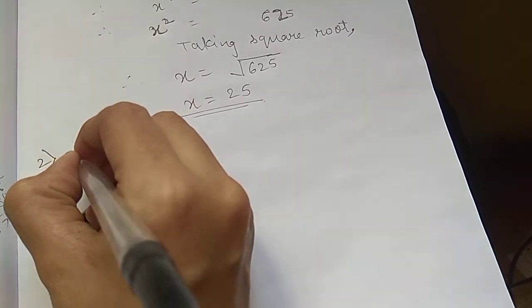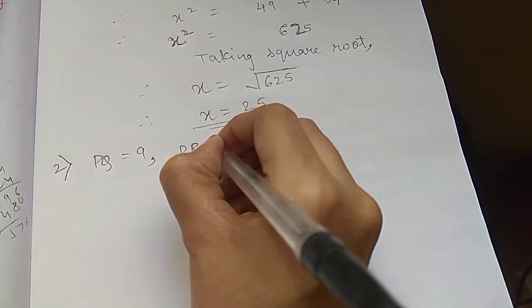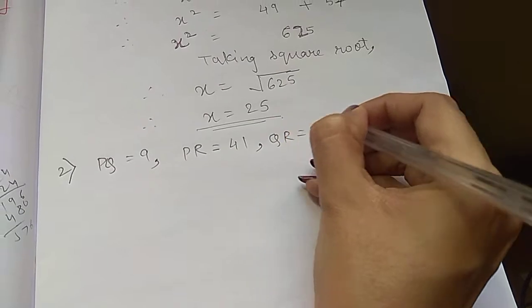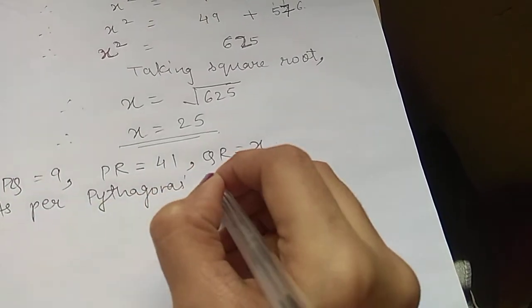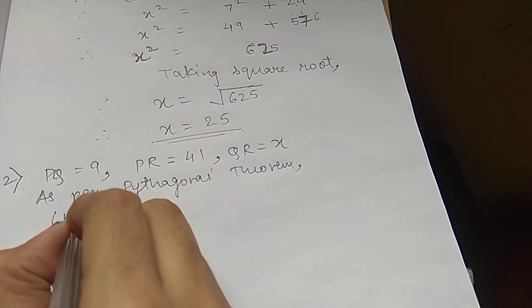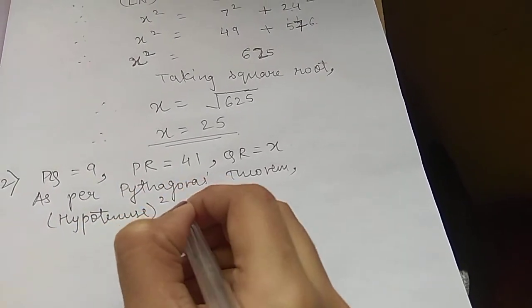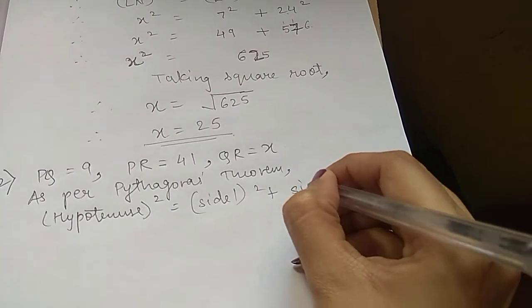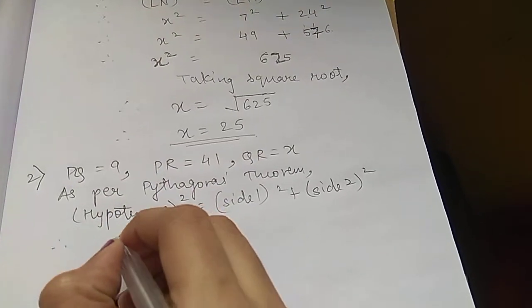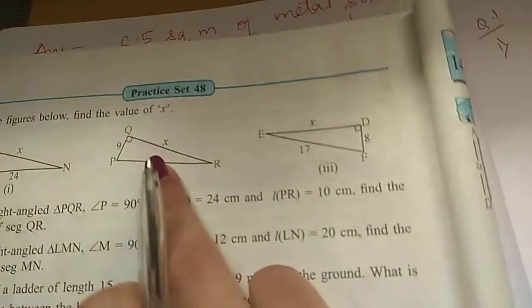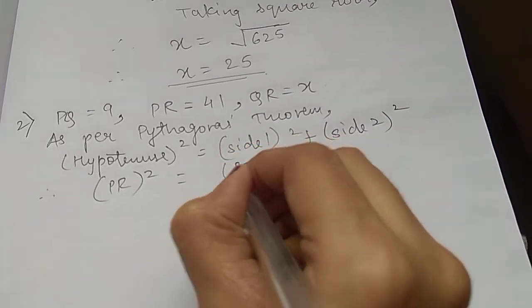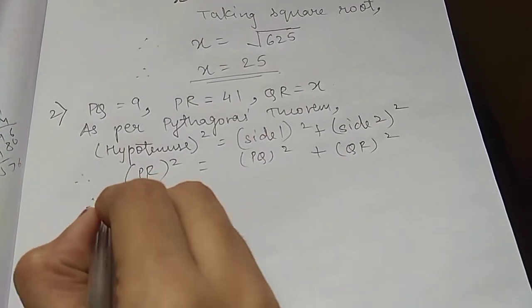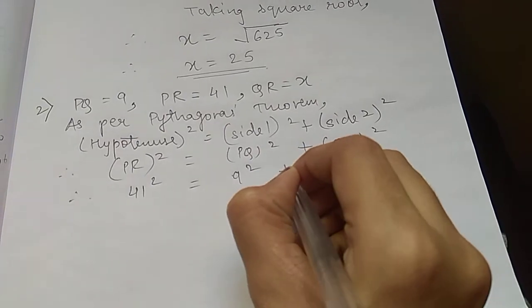Let's see the second sum. In the second sum, PQ is 9, PR is 41, QR is x, and PR is the hypotenuse. Again, as per Pythagoras theorem, hypotenuse square equals side 1 square plus side 2 square. The triangles are already right angles, so we can directly apply Pythagoras here. PR is 41, PQ is 9, QR is x.